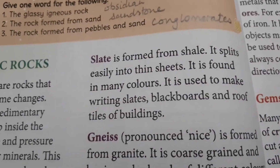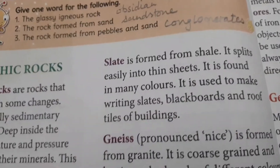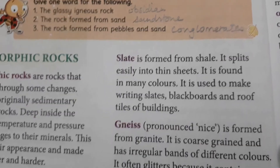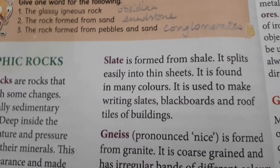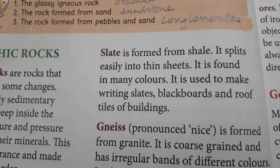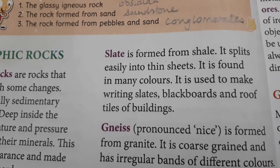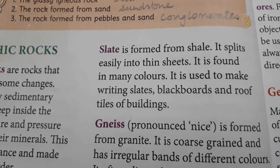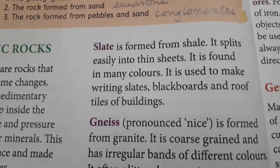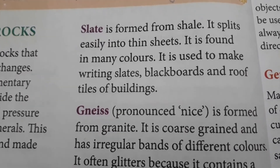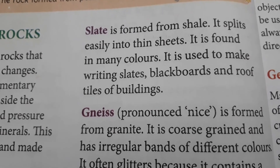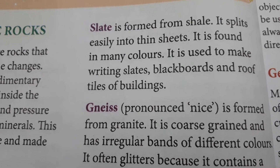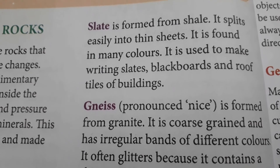The third type of metamorphic rock is slate. It is formed from shale, which is a sedimentary rock. Slate splits easily into thin sheets. It is found in many colors. It is used to make writing slates, blackboards, and roof tiles of buildings.